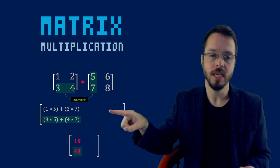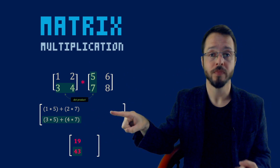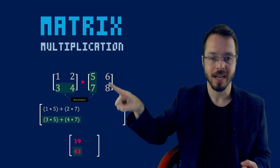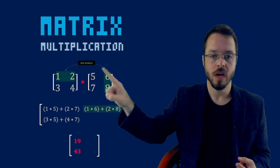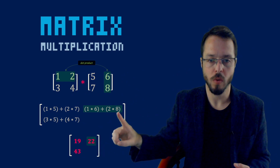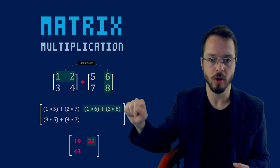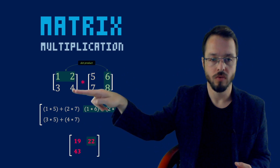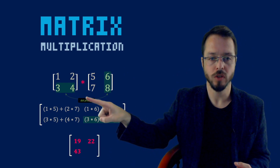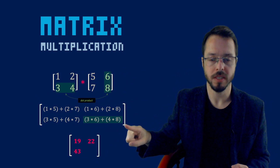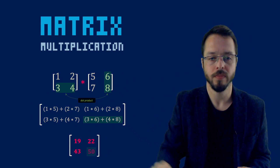Now let's go to the first row, second column. That is going to be the dot product between the first row and the second column: one times six plus two times eight, which gives us 22. And the last one — second row, second column — is three times six plus four times eight, which gives us 50.